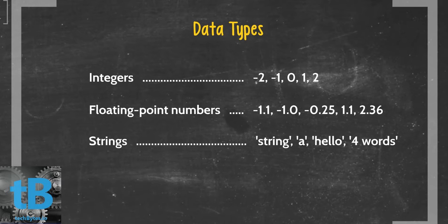Then you have your floating point numbers. Those ones have decimal points in them, such as negative 1.1 or 1.1 or 0.00001. Those are representations of floating point numbers. And then strings. That can be a list of characters within quotation marks, such as the word string, a, or you could have multiple, such as four words there at the end. You could have multiple words in that entire sentence in that string.